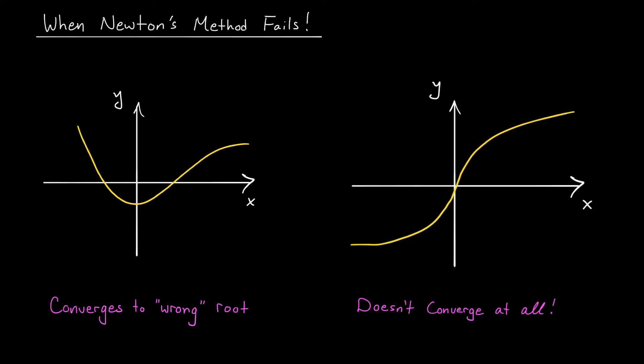When it works, Newton's method is an incredibly efficient way to approximate the roots of an equation. However, unlike the bisection method, Newton's method can fail, even for nice functions. I'm going to show you two examples of this, and then explain how you might go about fixing the problem.